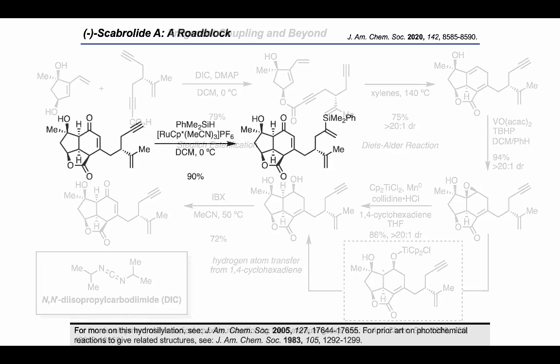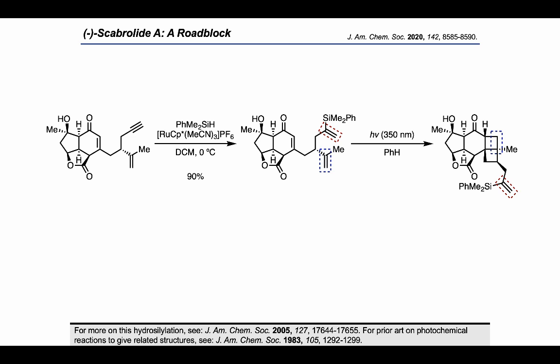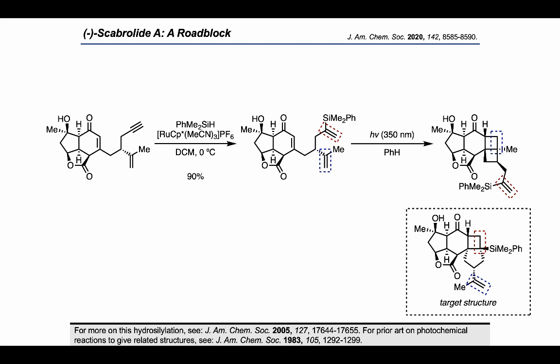Now, trying to perform a hydrosilylation/2+2 sequence, the authors carried out ruthenium-catalyzed hydrosilylation and subjected the product to irradiation with 350 nm light, but were surprised to find an unexpected product. This is the product of a cyclization with a non-conjugated alkene, marked in blue. You can see that in the target structure they were aiming for, they were trying to engage the alkene marked in red in the 2+2, rather than the blue one.